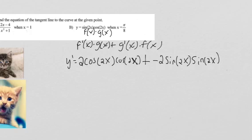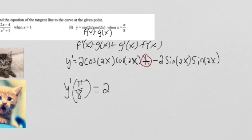So that is our whole derivative. We can take away the plus sign and say we're just subtracting 2 sine(2x) times sine(2x). Now what we can do is plug in π/8. We get y′(π/8) equals 2 cosine...